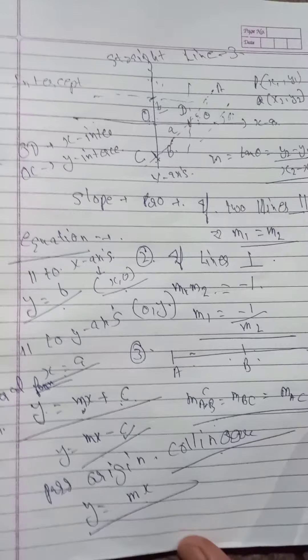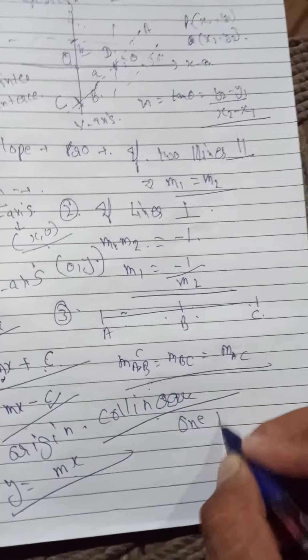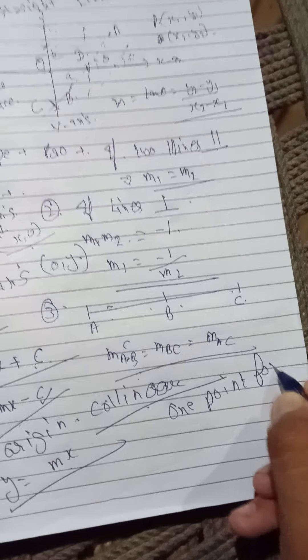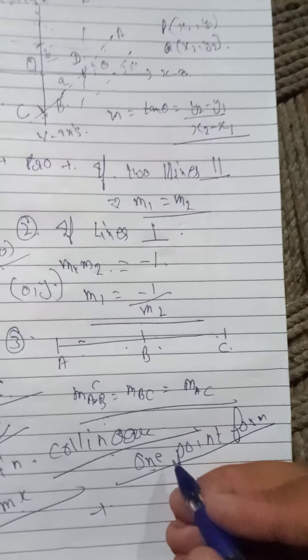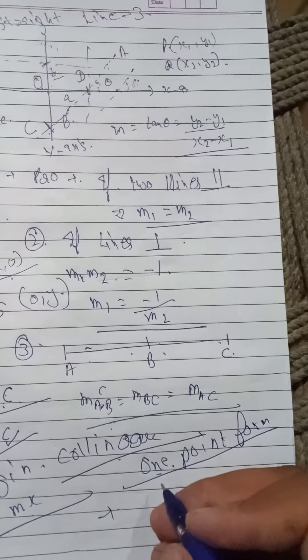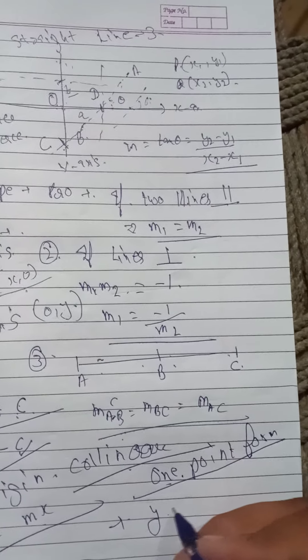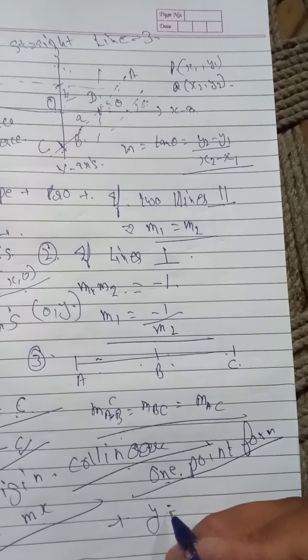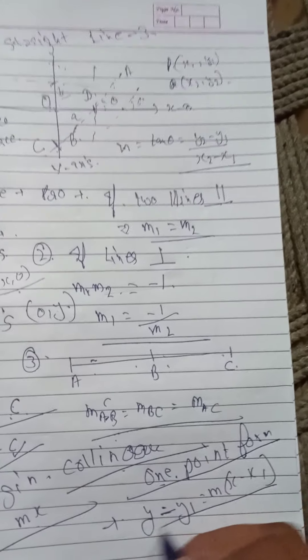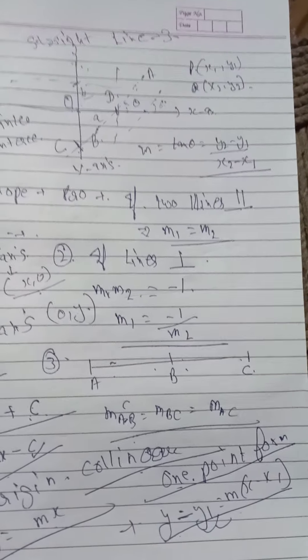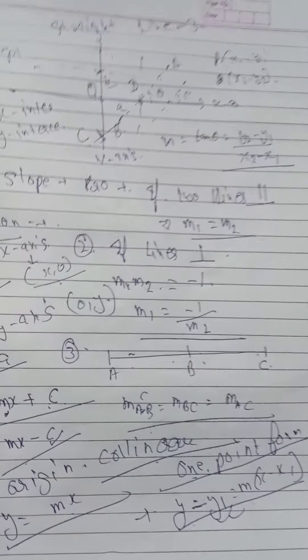Also, one point form is a formula to derive the equation of a line whose one point is given and we know the slope. If m is the slope and x1,y1 is the point, then y minus y1 is equal to m into x minus x1 is the equation to find the equation of that line, where x1,y1 is the point lying on that line.